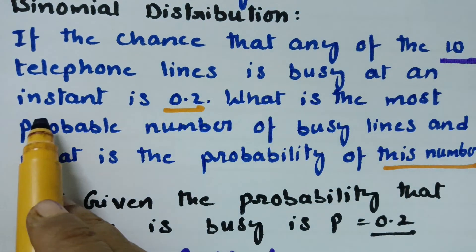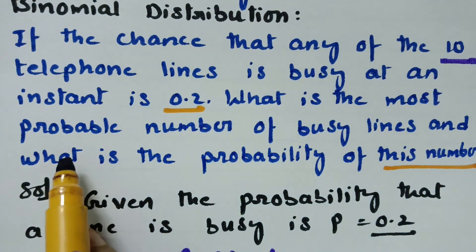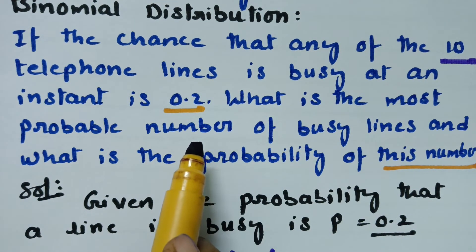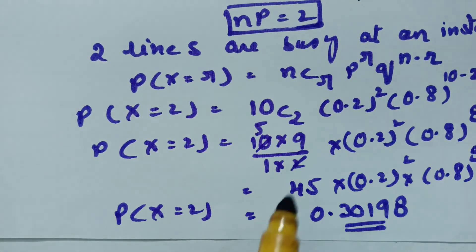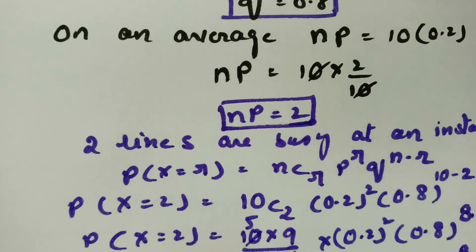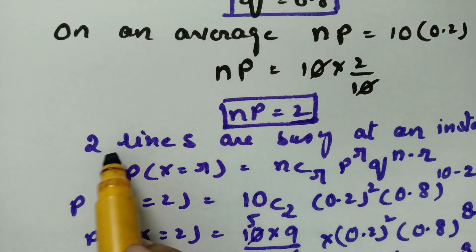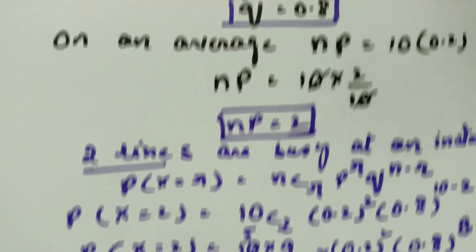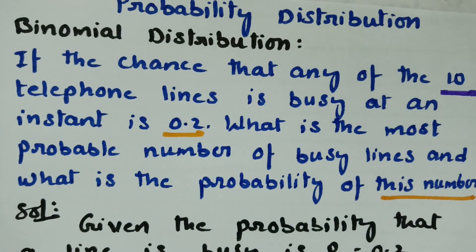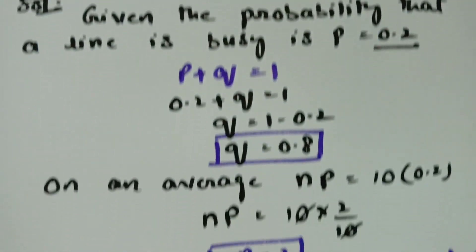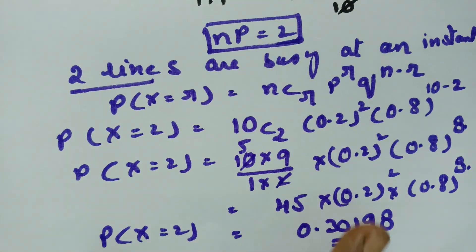So, 10 telephone lines is busy at an instant with probability 0.2. The most probable number of busy lines is the mean, np, which is equal to 2. The probability of this number is 0.30198. Here p is 0.2, q is 0.8, and n is 10. Therefore, two lines are busy at an instant and the answer is 0.30198.